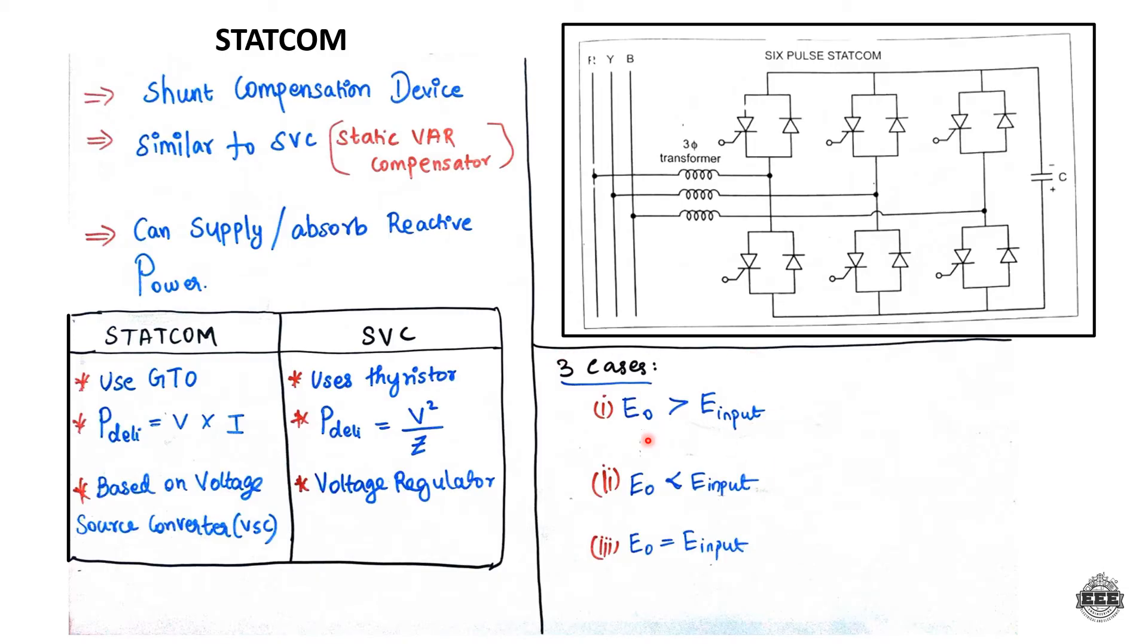Now for the three cases. E0 is the output voltage from the converter, and Einput is the system voltage.